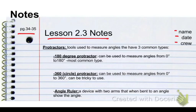All right, let's start on the notes today. We have very simple notes. Our notes are about protractors. Now a protractor is a tool used to measure angles. They have three common types. The first type is a 180 degree protractor, and that can be used to measure angles from 0 degrees to 180 degrees, and they are the most common type.